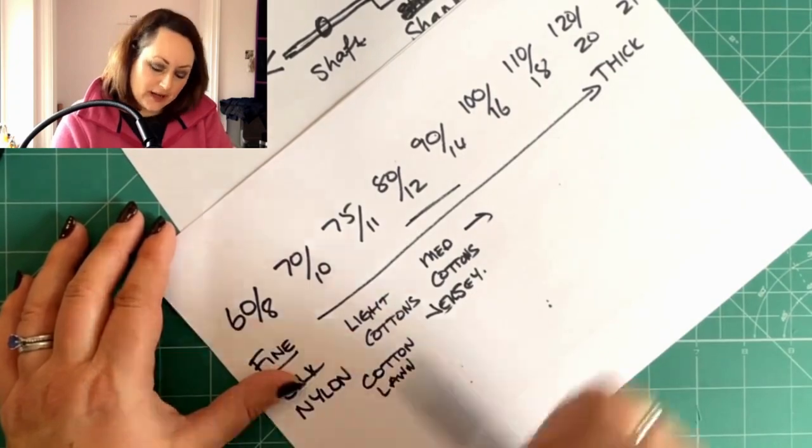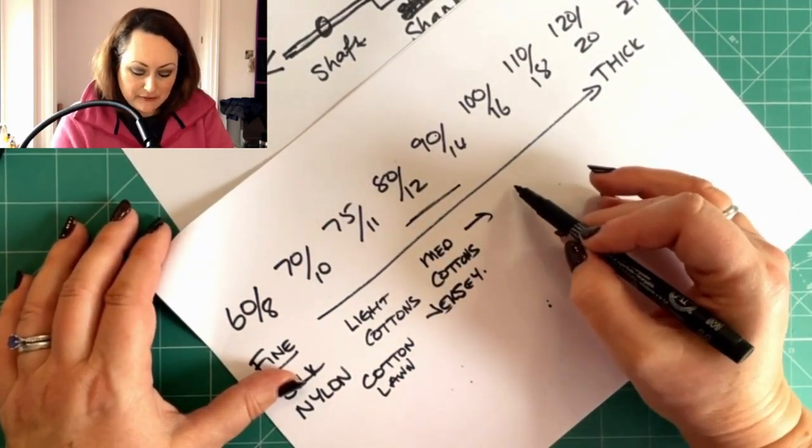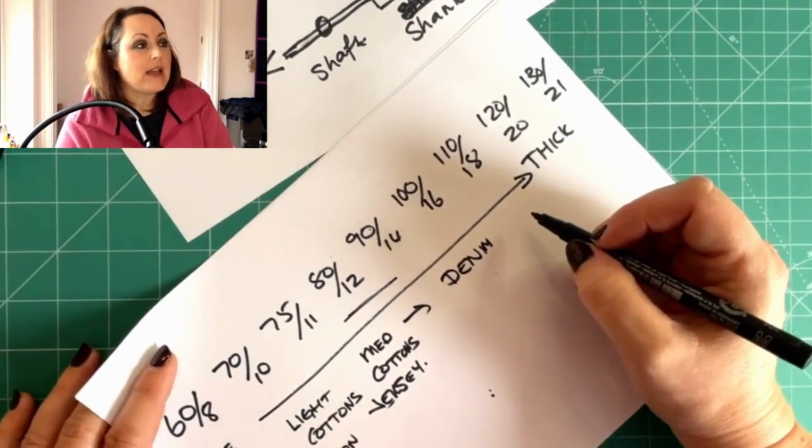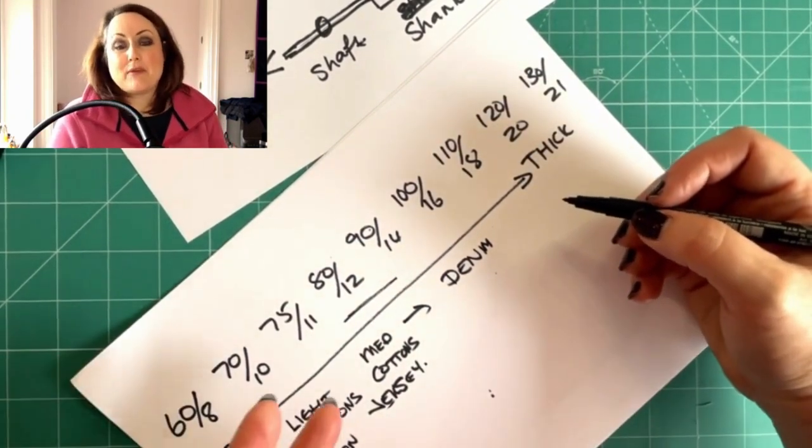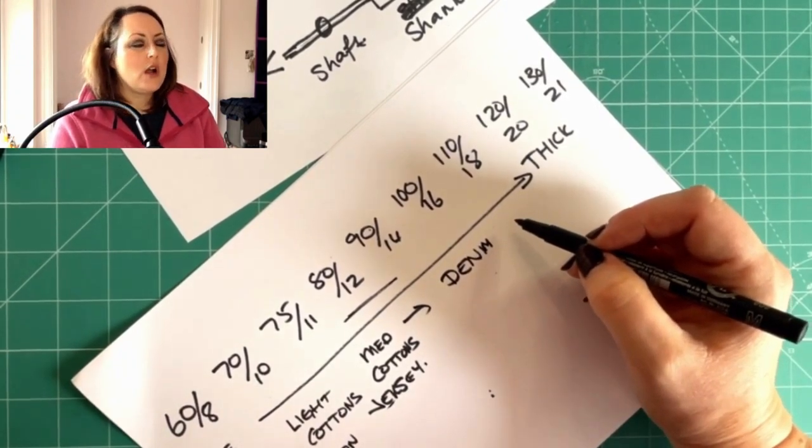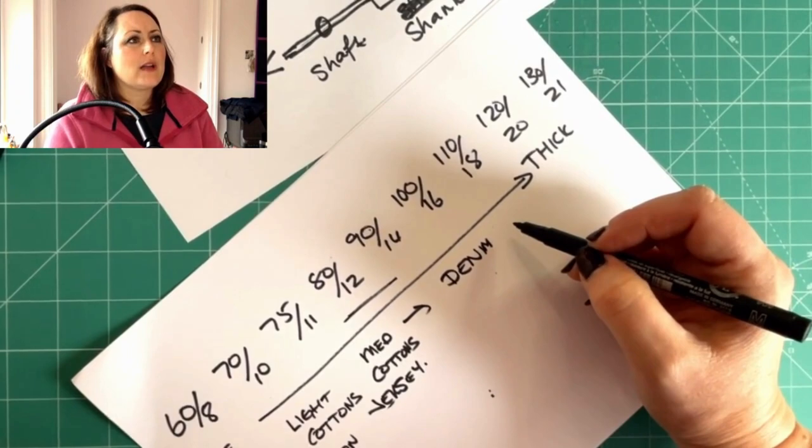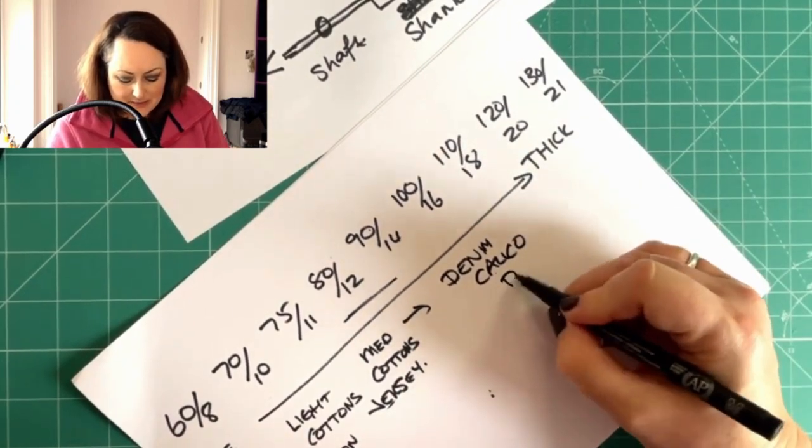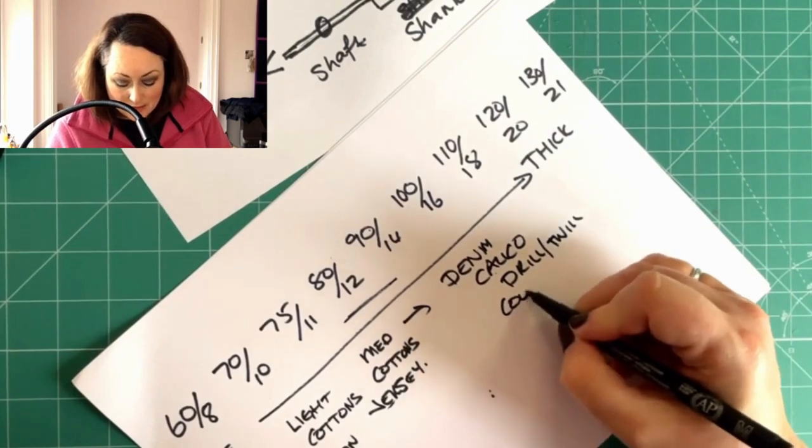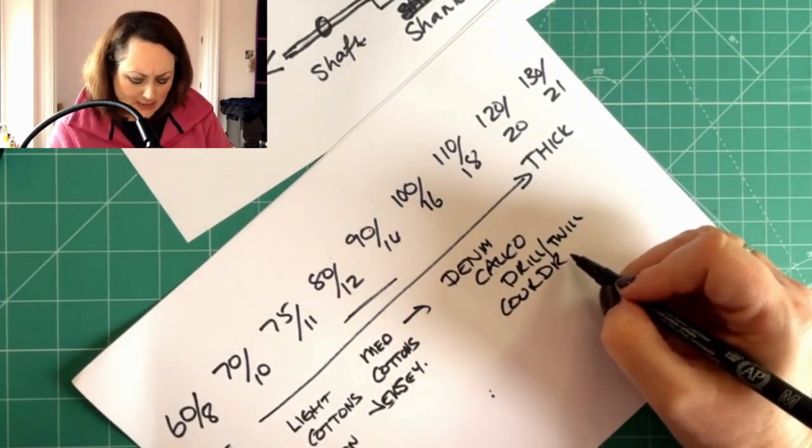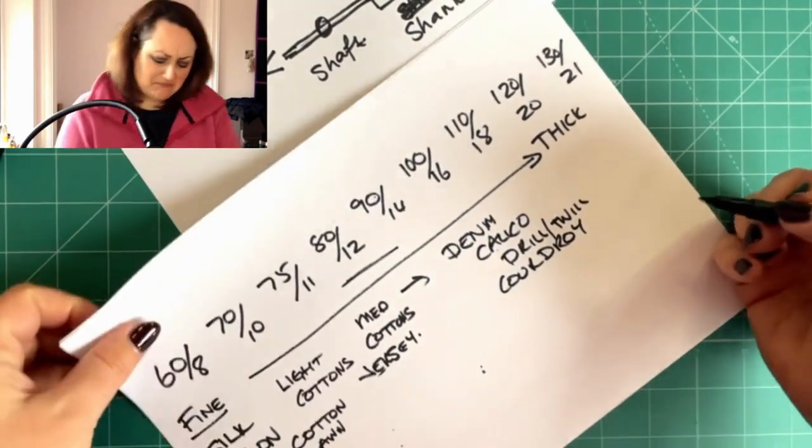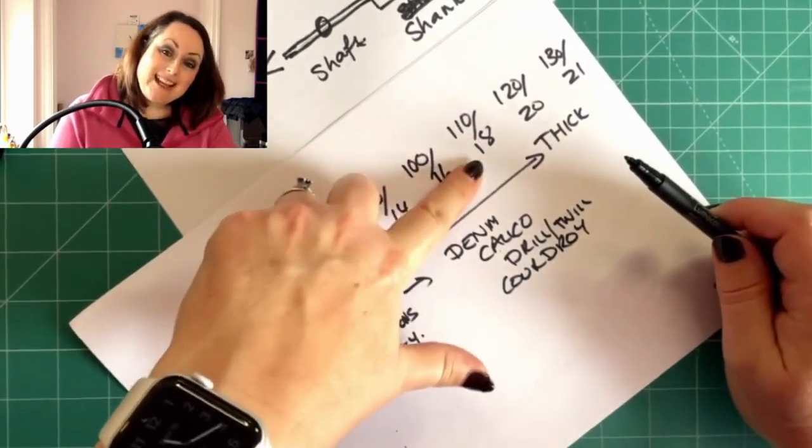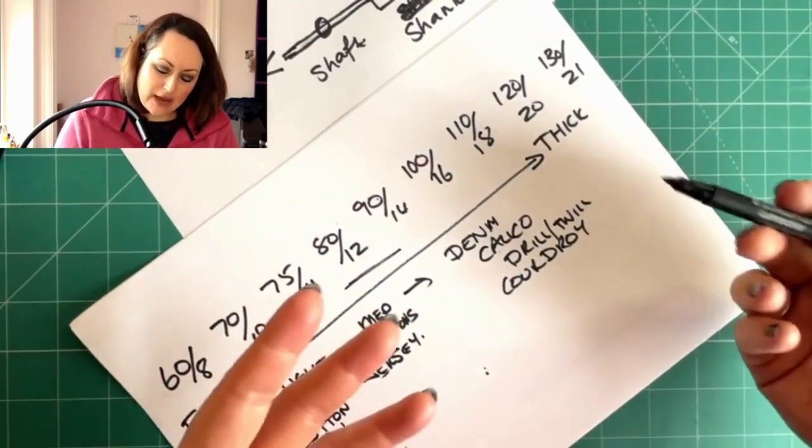So the thicker the fabric, we start going up. So if I was using denim, for instance, I would be up here. If I was working with canvas or a really thick apron type fabric, like a cotton twill or a drill or something like that, where we've got a thick calico, that would all be up here. Because it's a thicker fabric. Let's put drill or twill. Corduroy. How do you spell corduroy? I actually have no idea how you spell corduroy. Anyway, corduroy is up here somewhere. So we've got those thicker fabrics. So can you see, we need our thicker needles to go through our thicker fabrics. So it all starts making sense now.